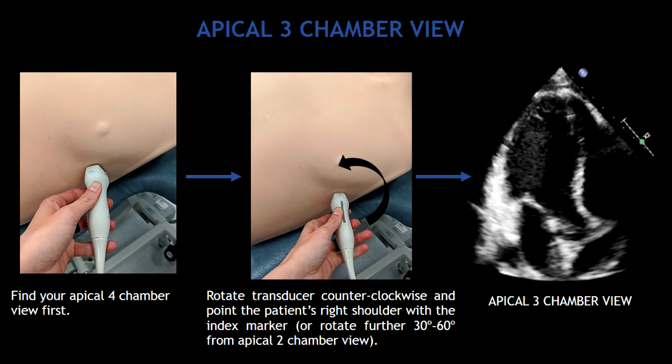And the last one is the apical three-chamber view. You can use two techniques to obtain this view. Either you find your four-chamber view first and rotate the probe counterclockwise until the index marker is pointing to the patient's right shoulder, or find your apical two-chamber view and rotate the probe counterclockwise between 30 and 60 degrees. The index marker has to be pointing to the patient's right shoulder. Either way, you can obtain the apical three-chamber view.